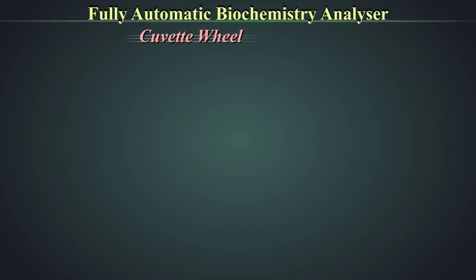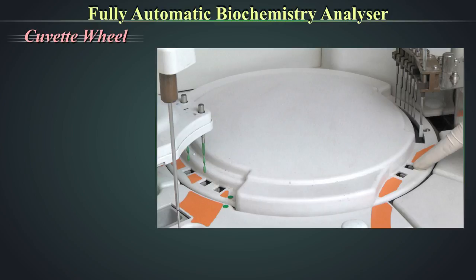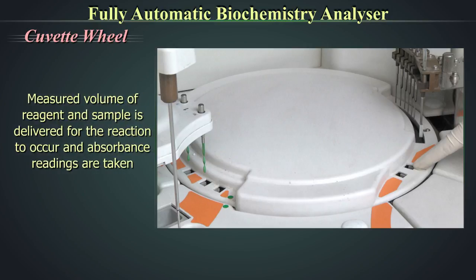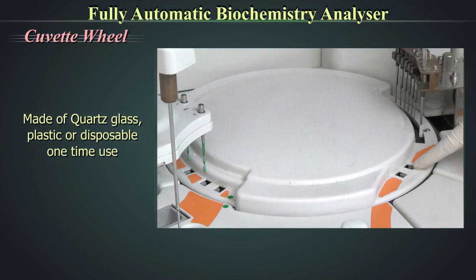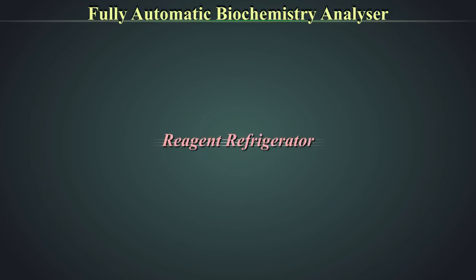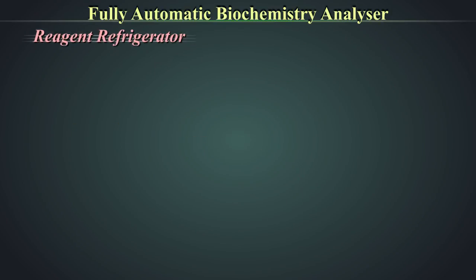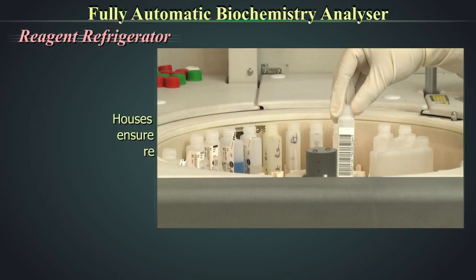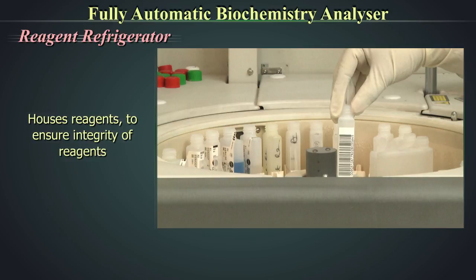The cuvette wheel houses glass cuvettes where measured volumes of reagent and sample are delivered for reaction to occur and absorbance readings are taken. The cuvettes are made of quartz glass, plastic, or disposable one-time use material.